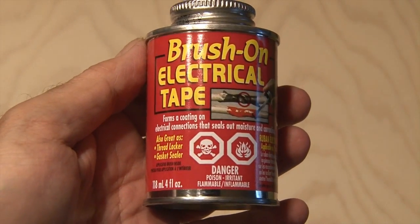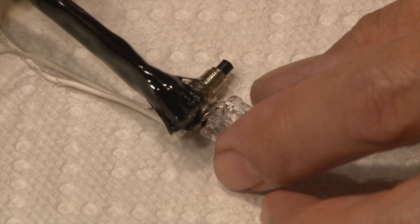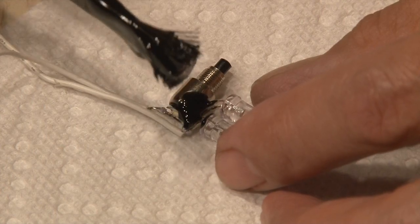Brush-on electrical tape is really handy because it covers a lot of things and it's better than tape. So I added a generous amount to the contacts on the LEDs and the switch.